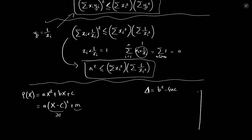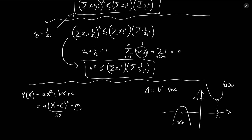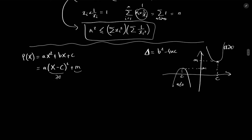Graphically, if we represent the parabola on a graph, the quantities C and M correspond to the vertex. When A is greater than 0, C is the x-value at which the minimum is reached and M is the value of that minimum. When A is negative, C is the x-value at which the maximum is reached and M is the value of that maximum. From this graph, assuming A ≠ 0, it's easy to know how many roots the polynomial has based on the quantity A·M.